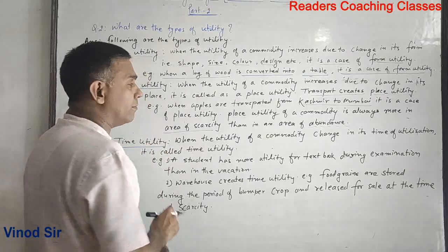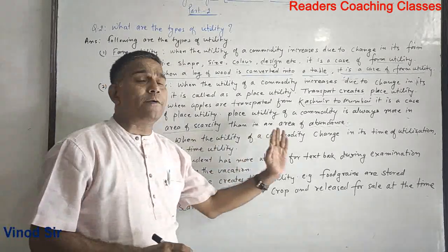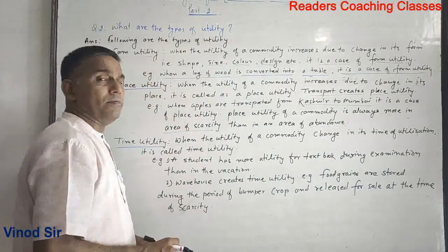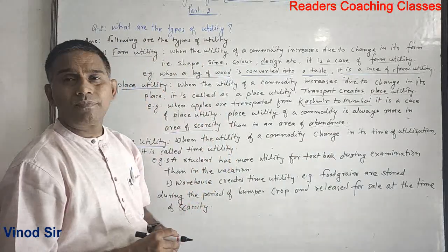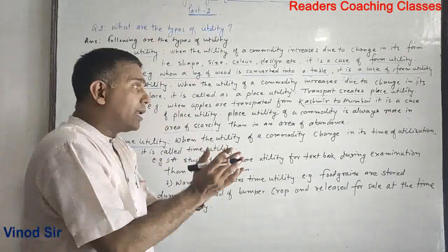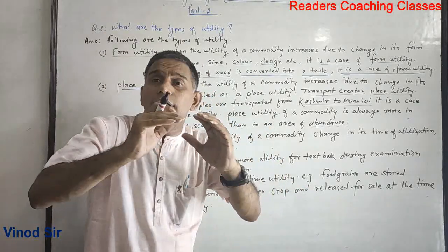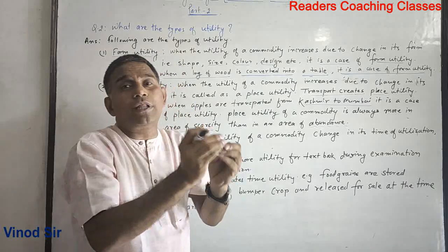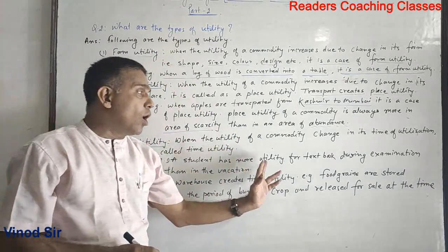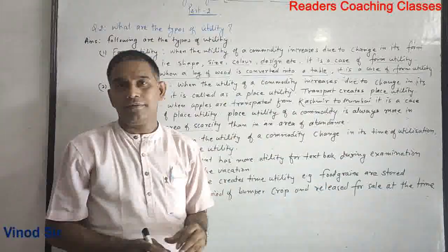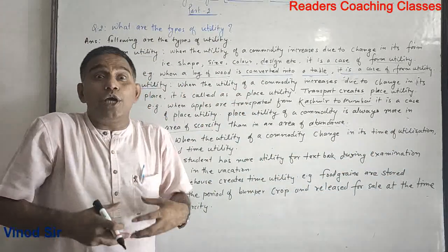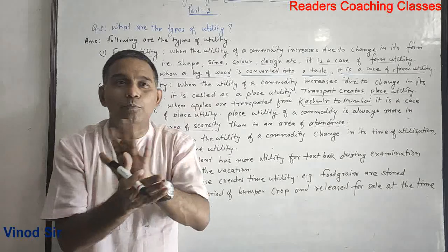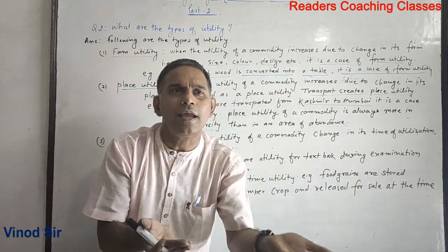Time utility: when the utility of a commodity changes due to a change in its time of utilization, it is called time utility. We use it at a particular time. For example, a student has more utility for textbooks during examination time. When the exam time has come, the student's utility is very much higher; if the vacation time has gone, then the student has no utility for the textbook.